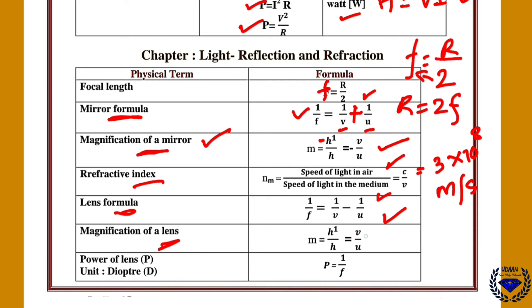So magnification will be plus here, that is plus v by u plus H dash by H. Then power of lens SI unit is diopter. So power of lens is given by P is equal to 1 upon f.